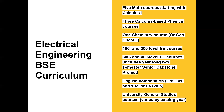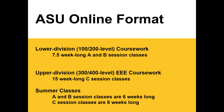The program also includes 300- and 400-level electrical engineering coursework. All students at ASU must complete the equivalent of English 101 or 102 — English composition — and university general studies such as humanities. In the ASU online format, lower-division 100- and 200-level coursework is completed in the seven-and-a-half-week A and B sessions, and all upper-division 300- and 400-level coursework is in the 15-week traditional C session semester. A and B sessions overlap C for one semester.